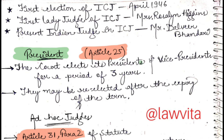After 3 years, a new president and vice president is elected. They are also eligible for re-election after the expiry of their term. This is governed by Article 25.